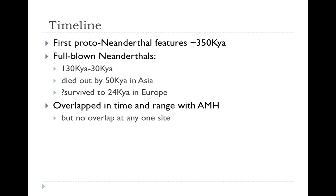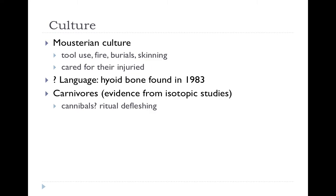The key point is that Neanderthals overlapped in time and range with anatomically modern humans. We haven't seen direct evidence of them living in the same place at the same time, but anatomically modern humans were in Europe simultaneously with Neanderthals. There is a characteristic culture archaeologists recognize in tools associated with Neanderthals. They're thought to have used fire, buried their dead, and skinned animals. There's even evidence that they cared for the injured — some remains show healed skeletal injuries that suggest individuals couldn't have survived alone.